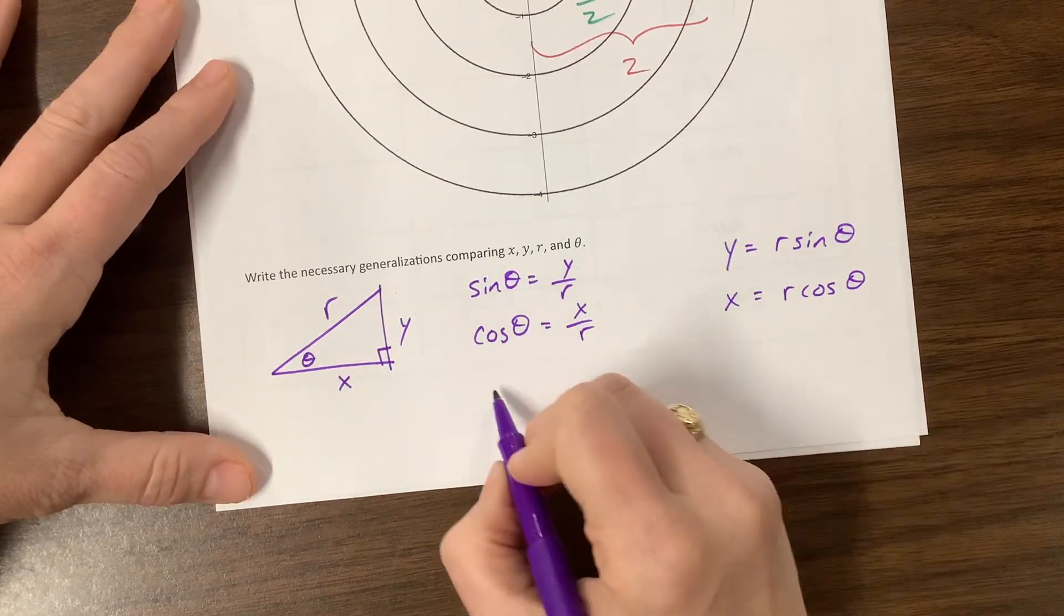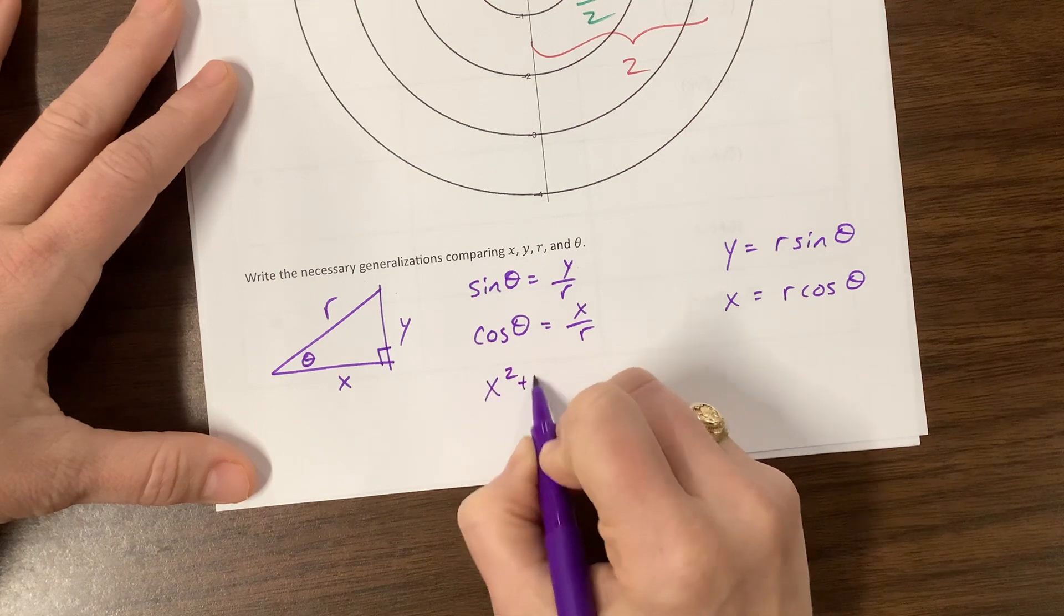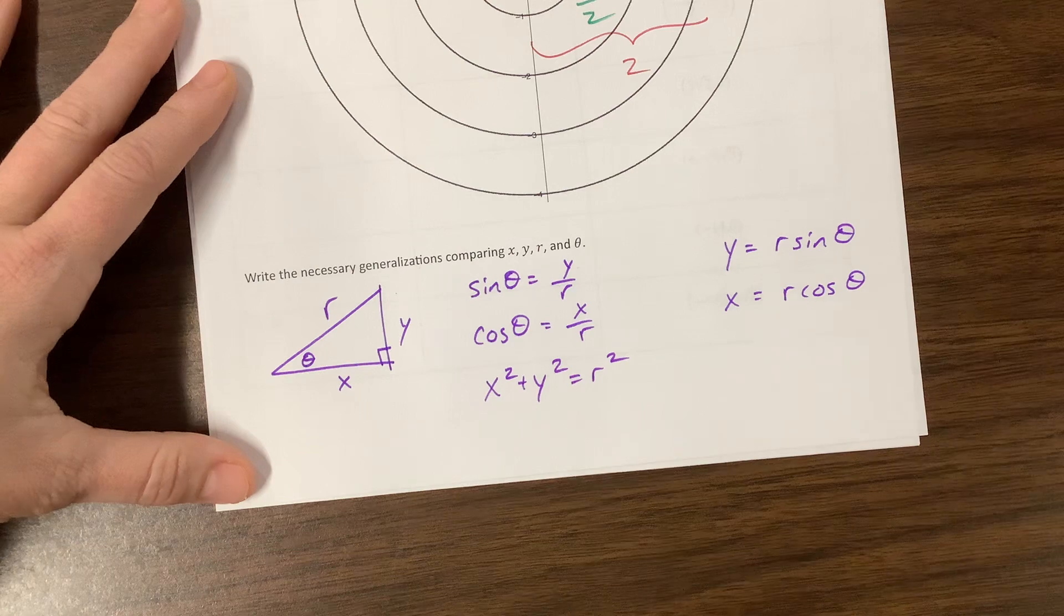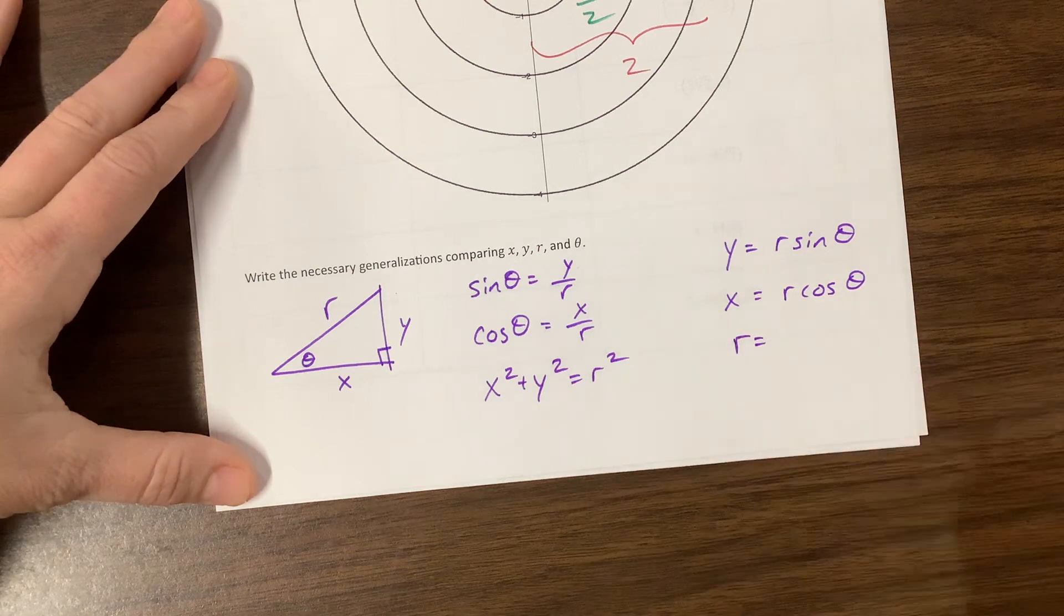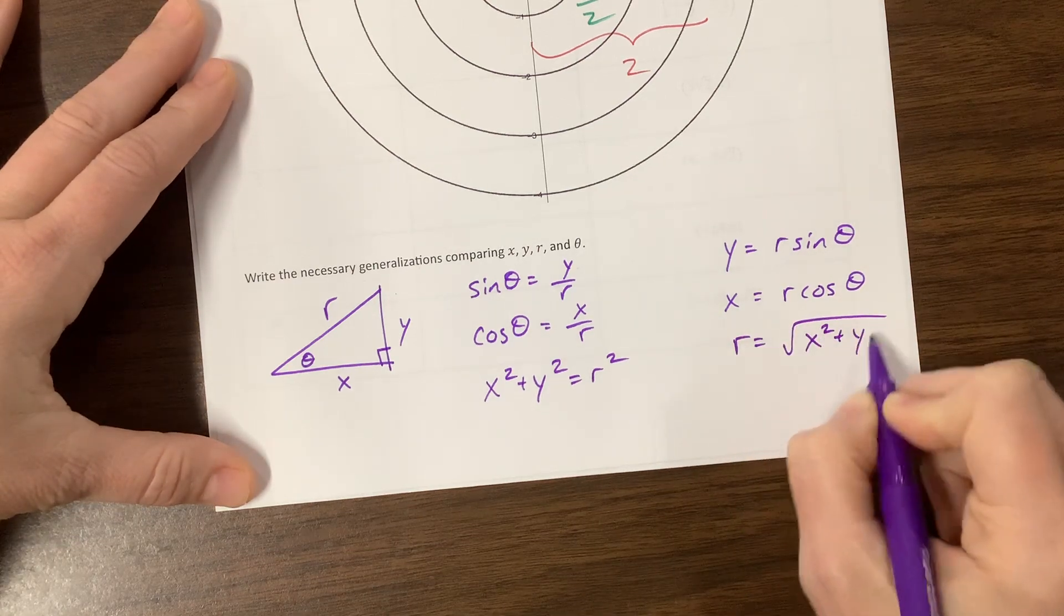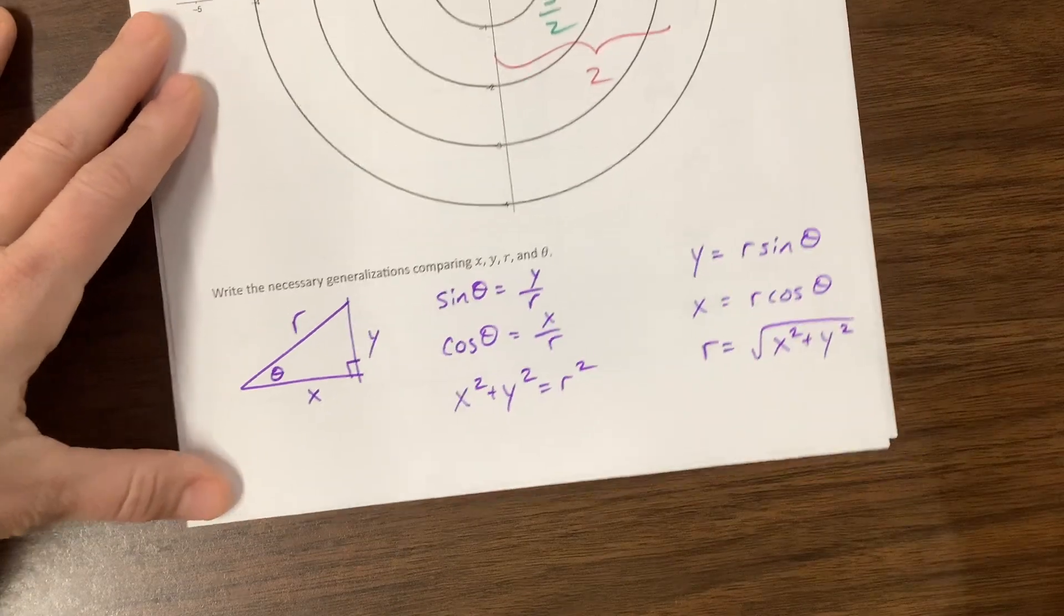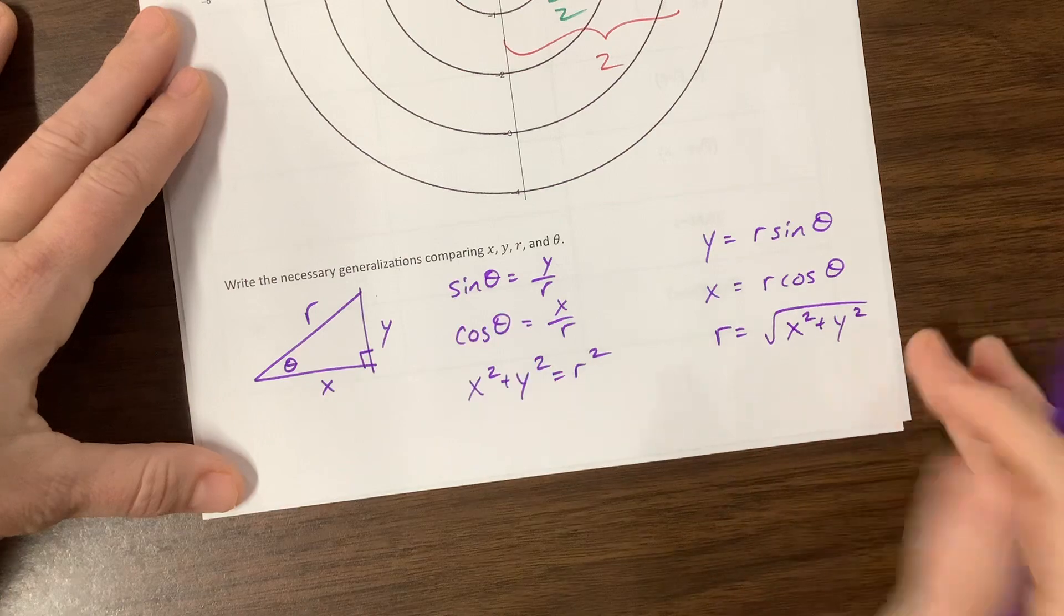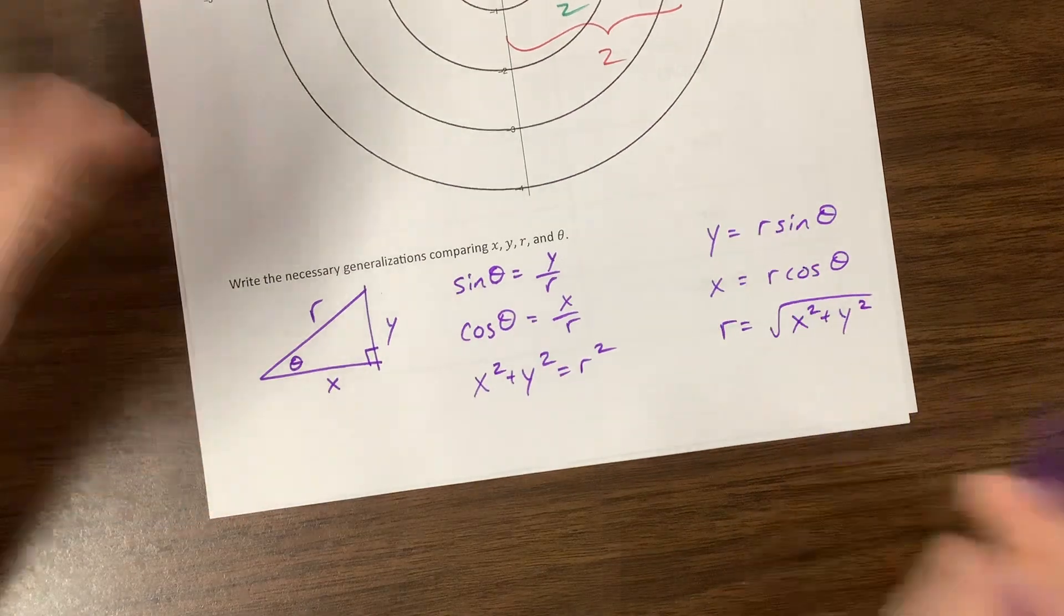Okay, then what else do we know? I know that x squared plus y squared is equal to r squared because that's Pythagorean theorem. We've got this lovely right triangle. And so if I want to solve for r, it's the square root of x squared plus y squared. And our radius tends to be positive no matter what. All of these problems, I always keep my radius positive. So there you go. Keep that positive.